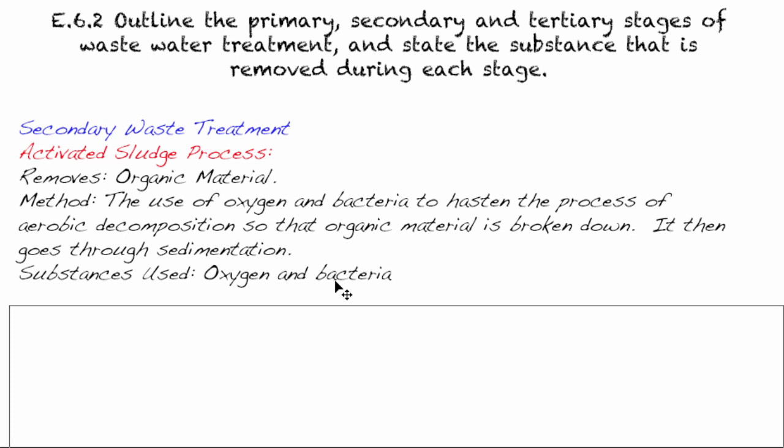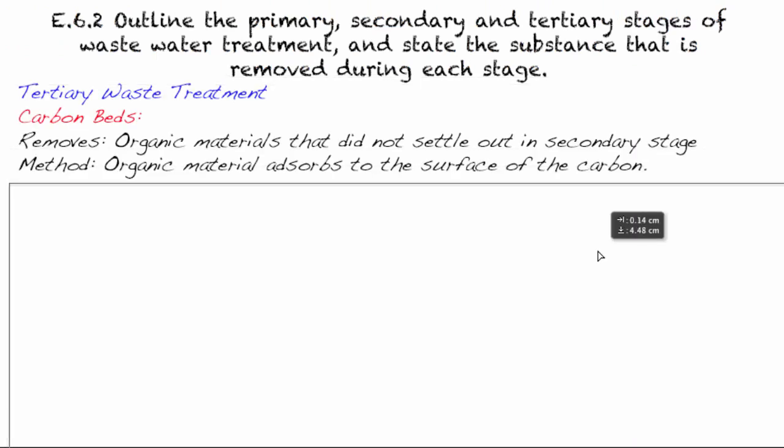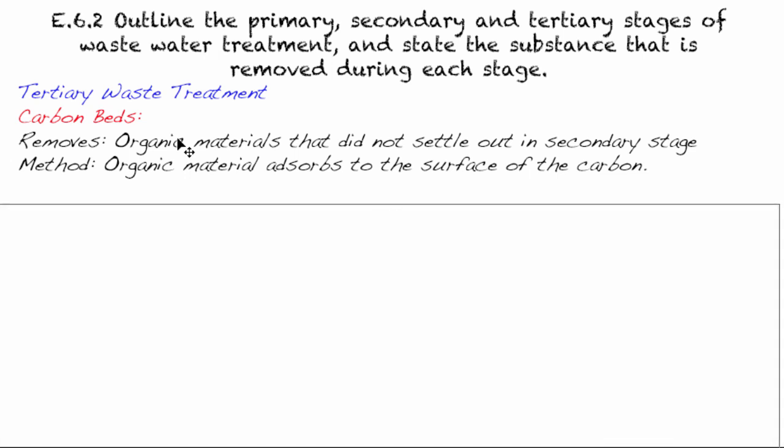Onto the third, or tertiary waste treatment. This one is more chemical in nature. So there's a few different processes that can work together here. Let's start with carbon beds. Now, if you've ever had a Brita water filter, that's basically what a carbon bed is. And the little black remnants at the bottom, that's carbon. So what it does is it removes organic material that did not settle out in the secondary stage. And the method that it does this is that the organic material will adsorb. Again, keyword there, with a D, adsorbs to the surface of the carbon.